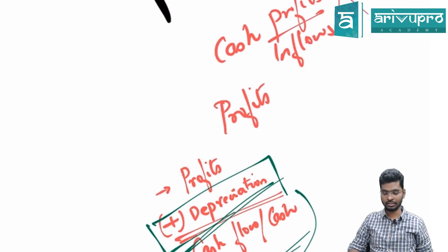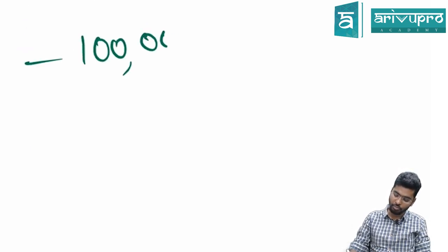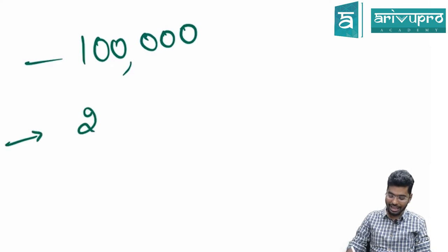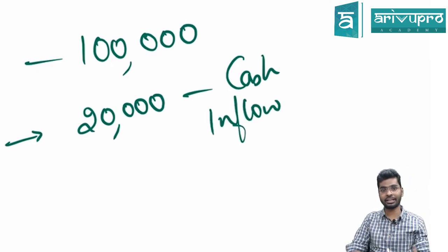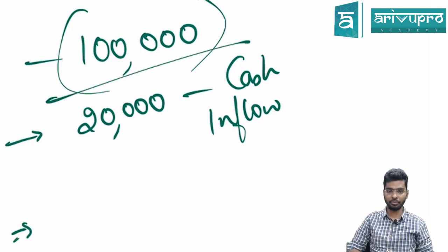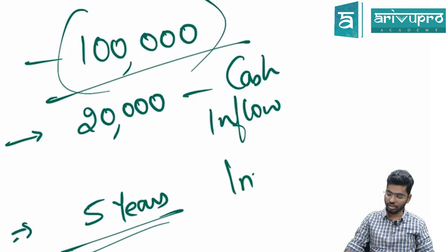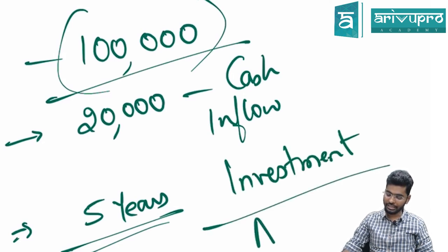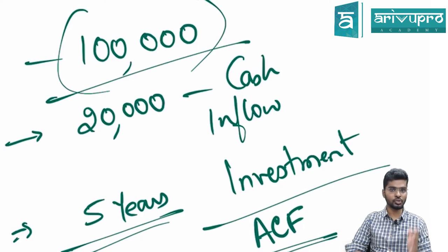The second special case is when you have equal cash flows. For example, if you invest ₹1,00,000 in a project and receive an equal cash inflow of ₹20,000 every year, the payback period is simply ₹1,00,000 ÷ ₹20,000 = 5 years. The formula is: Investment ÷ Annual Cash Flow (ACF). This formula can only be used when cash flows are equal each year.